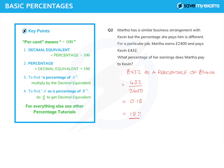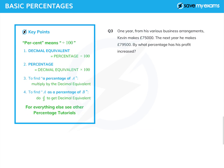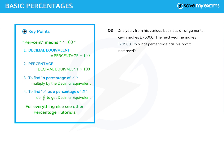Let's look at one more. One year Kevin makes £75,000 from these business arrangements, and the next year he makes £79,500. By what percentage has his profit increased?